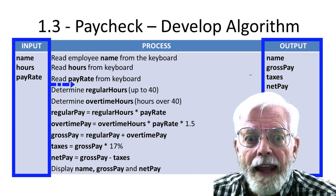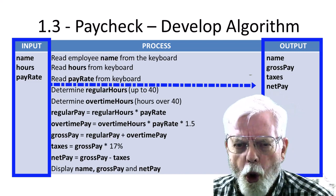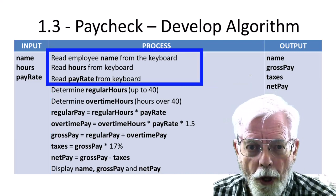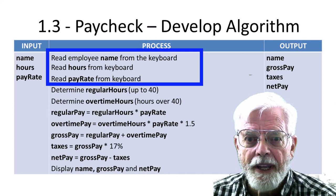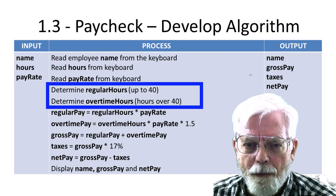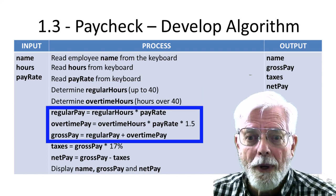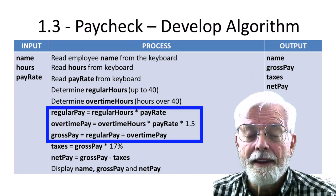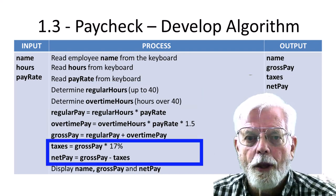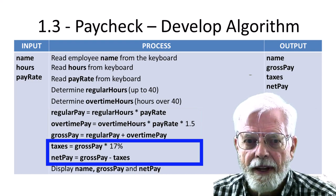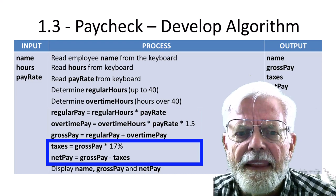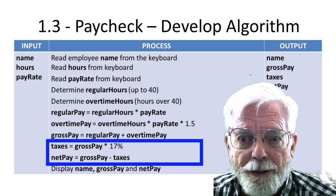We're going to read the name, hours, and pay rate from the keyboard. Determine the number of regular hours. Determine the number of overtime hours. Compute the regular pay, compute the overtime pay, and then compute the gross pay. Compute taxes, and finally, the net pay. That's what's left over after everything has been taken out.